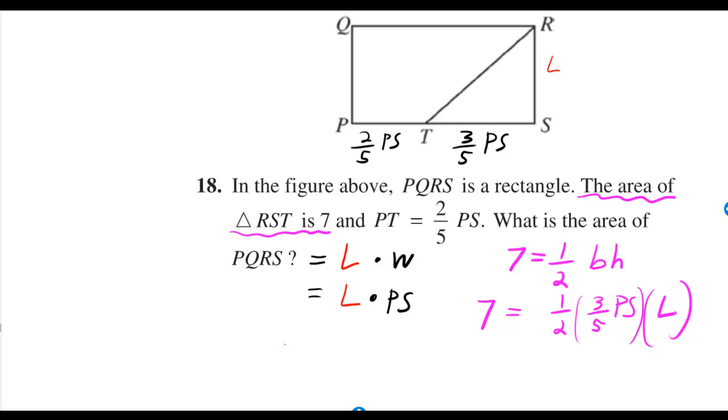In the figure above, PQRS is a rectangle. The area of triangle RST is 7, and PT is 2/5 of PS. What is the area of PQRS?